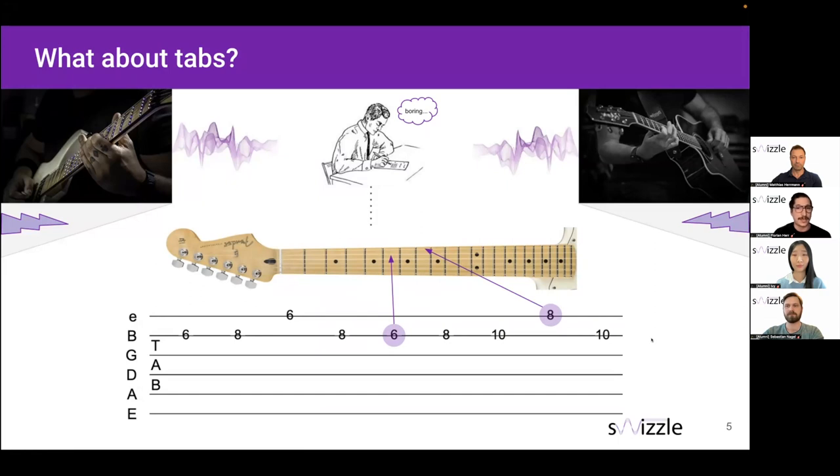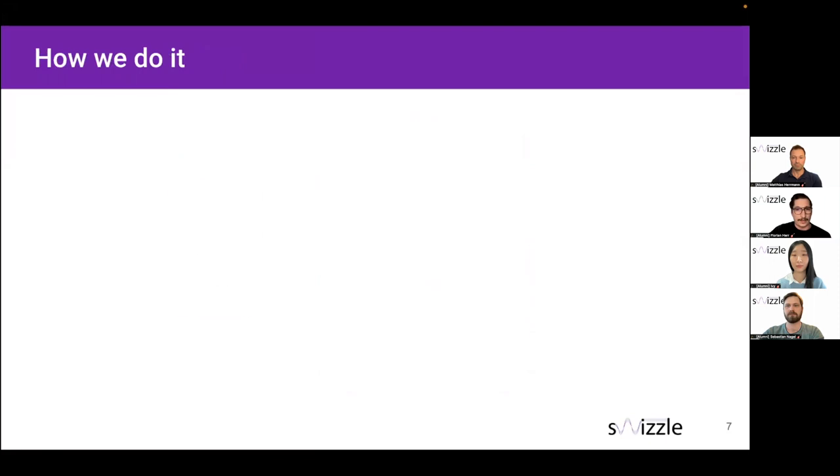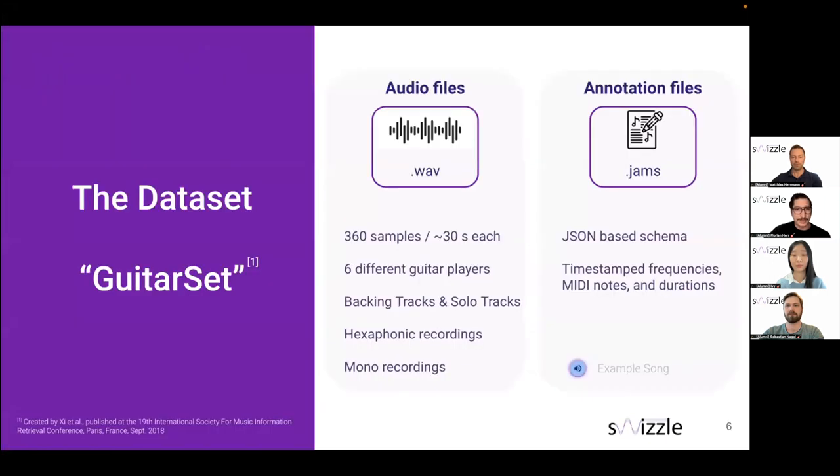Since we use an AI, we of course need data to work with. And in this case, we use a data set consistent on the one hand of audio files in the raw format. We have about 360 songs of different guitar players, playing styles and record modes. On the other hand, we have the annotation files in JAMS format, which is a JSON-based schema and contains information about timestamps and frequencies. Let's play a sample song.